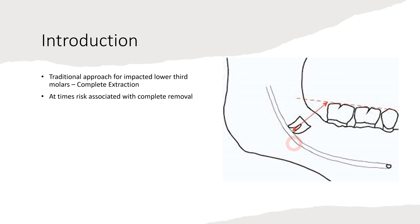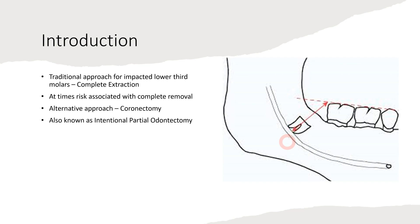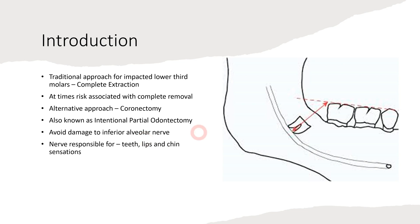An alternative to complete removal by extraction is known as coronectomy, also called intentional partial odontectomy. In this procedure we remove the crown of the tooth only, leaving the roots as they are because they are close to the nerve. This helps us avoid damage to the inferior alveolar nerve, which supplies sensory innervation to the teeth, lips, and chin.